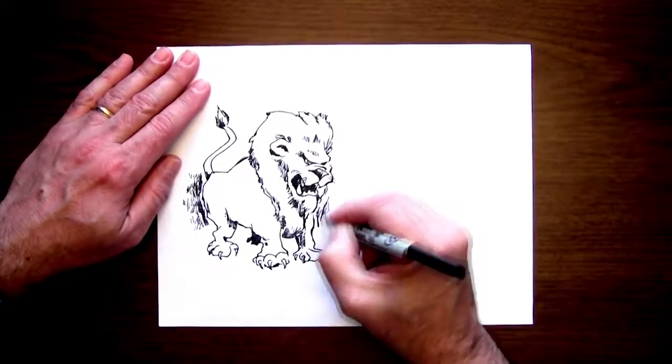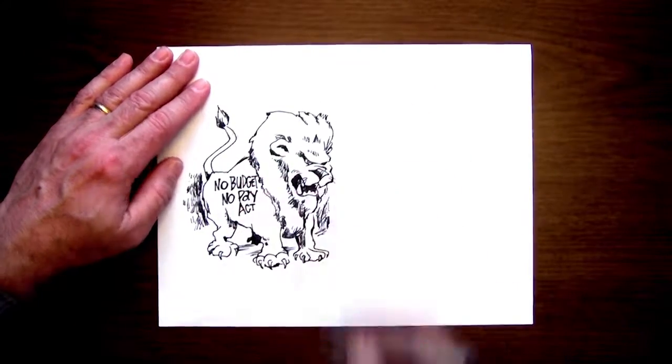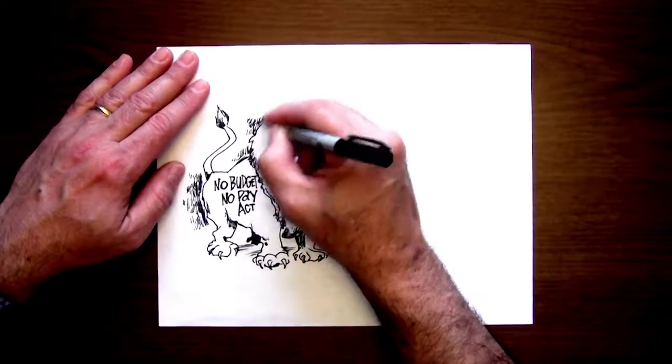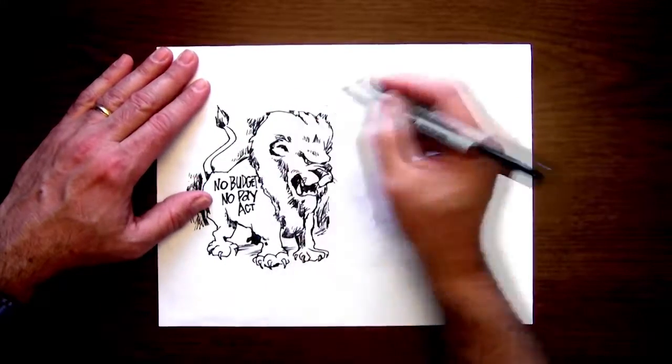So, I'll draw this No Budget, No Pay Act as a lion, and I'll give him some nasty-looking teeth and make him look kind of ferocious here.